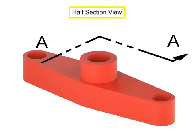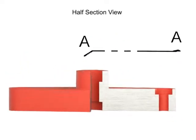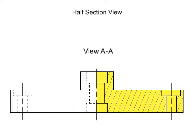Half section views are created when a section is taken from only one half of a symmetrical object. The cutting plane line for this type of view has only one arrow, since you are only viewing the section on one half of the object.